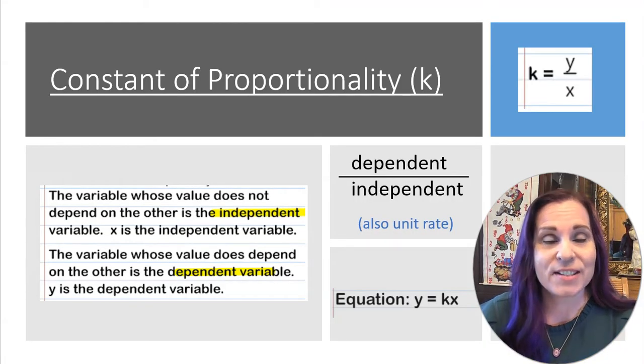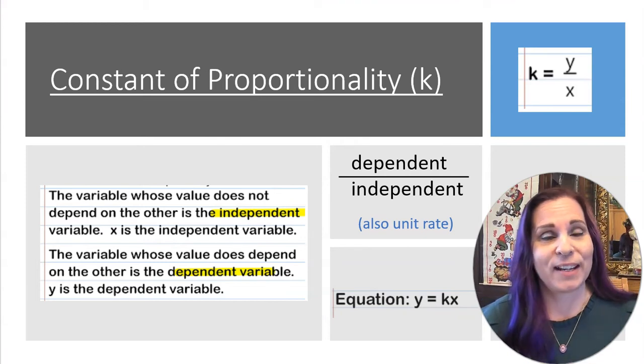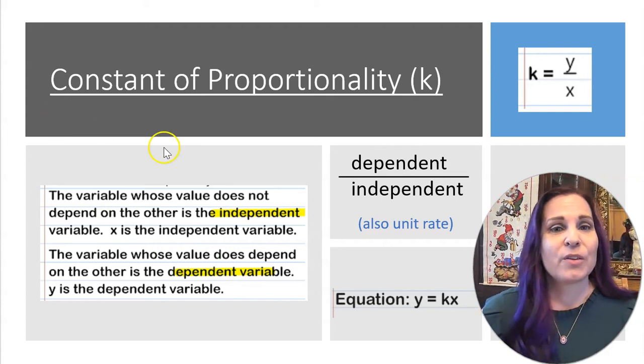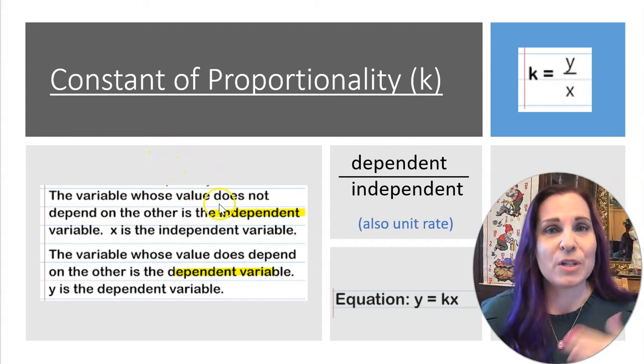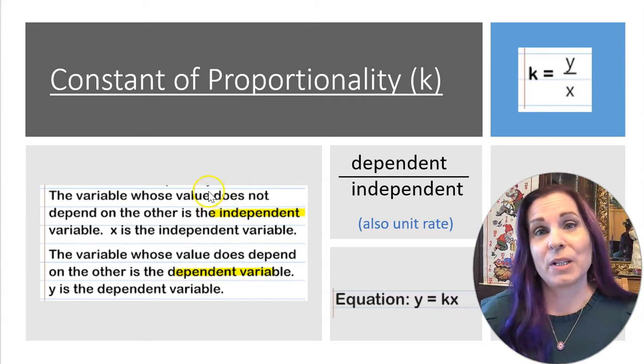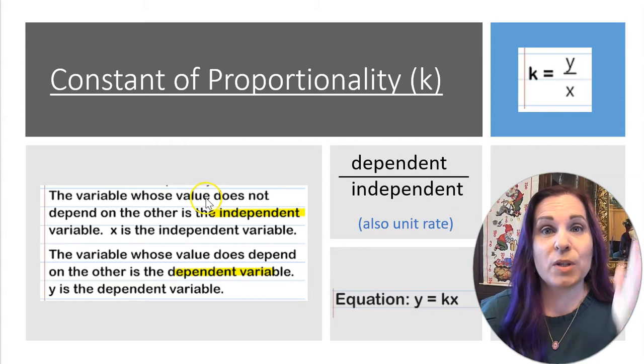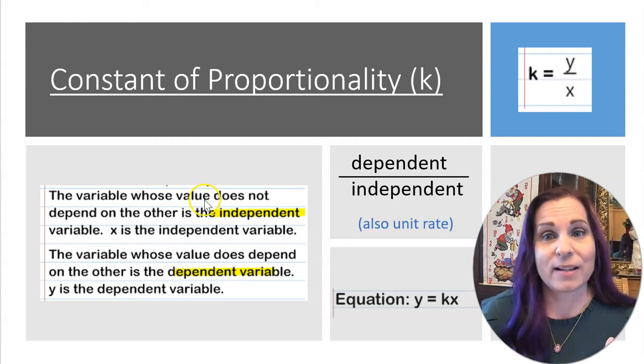The constant of proportionality sounds kind of complicated, but is actually really simple. So we have two different types of variables when we have functions or graphs. We have the independent variable, which is always the one that's on the x-axis, and we've got dependent, which is always the one that's graphed on the y-axis.